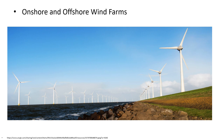Almost all large wind turbines have the same design: a horizontal axis wind turbine having an upwind rotor with three blades attached to a nacelle on top of a tall tubular tower. In a wind farm, individual wind turbines are interconnected with a medium voltage, often 34.5 kV, power collection system and communication network. A distance of 7D — that is, 7 times the rotor diameter — is set between each turbine in a fully developed wind farm. At a substation, this medium voltage current is increased using a transformer for connection to the higher voltage electric power transmission system.